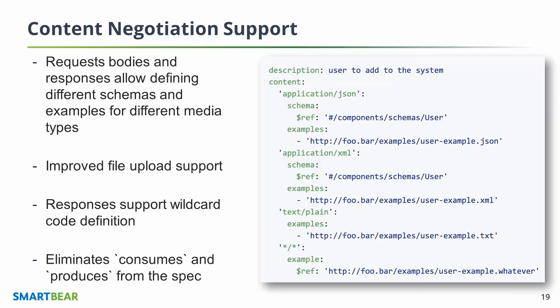Or if the structure of JSON and XML are completely different, you can now specify that, which you couldn't have done before. There's no longer a consumes field — you explicitly have to specify which media type you end up using. You can also use wildcards to specify a range.